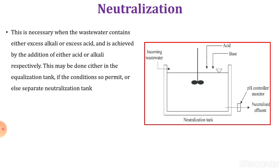Neutralization is necessary when the wastewater contains either excess alkali or excess acid, and is achieved by the addition of either acid or alkali respectively. This may be done either in the equalization tank if conditions permit, or else in a separate neutralization tank. As we know, industrial wastewater may be too acidic or too alkaline.